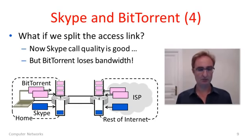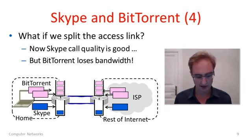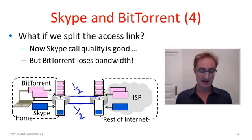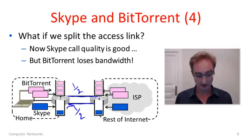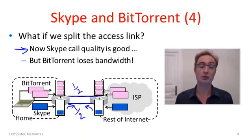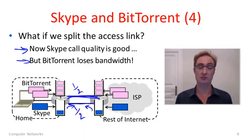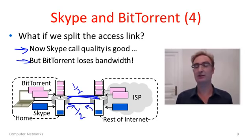What could we do? We could split the access link into two links, each with half the bandwidth, and change the routing so BitTorrent goes over one and Skype over the other. Now Skype packets see very few packets queued so they go on the link right away — low delay, low loss, good call quality. However, BitTorrent has basically lost half the available bandwidth. We've created a complicated network and haven't fully fixed the problem.